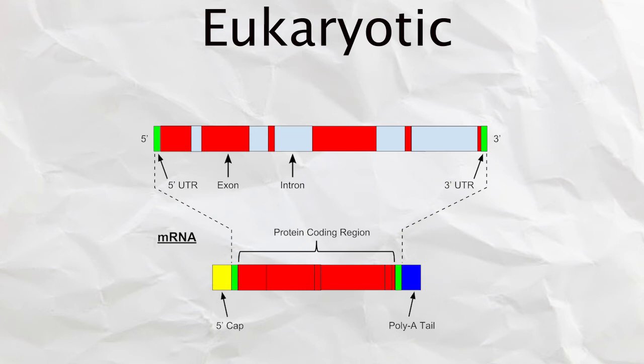After splicing, all the exons are put together along with the UTRs to make the functional mRNA with a 5' cap and a 3' poly-A tail added onto the mRNA.